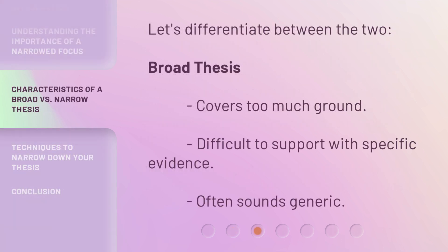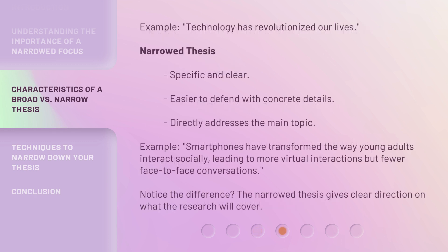Let's differentiate between the two. Broad thesis: covers too much ground, difficult to support with specific evidence, and often sounds generic. Example: 'Technology has revolutionized our lives.' Narrowed thesis: specific and clear, easier to defend with concrete details, and directly addresses the main topic. Example: 'Smartphones have transformed the way young adults interact socially, leading to more virtual interactions but fewer face-to-face conversations.' Notice the difference? The narrowed thesis gives clear direction on what the research will cover.